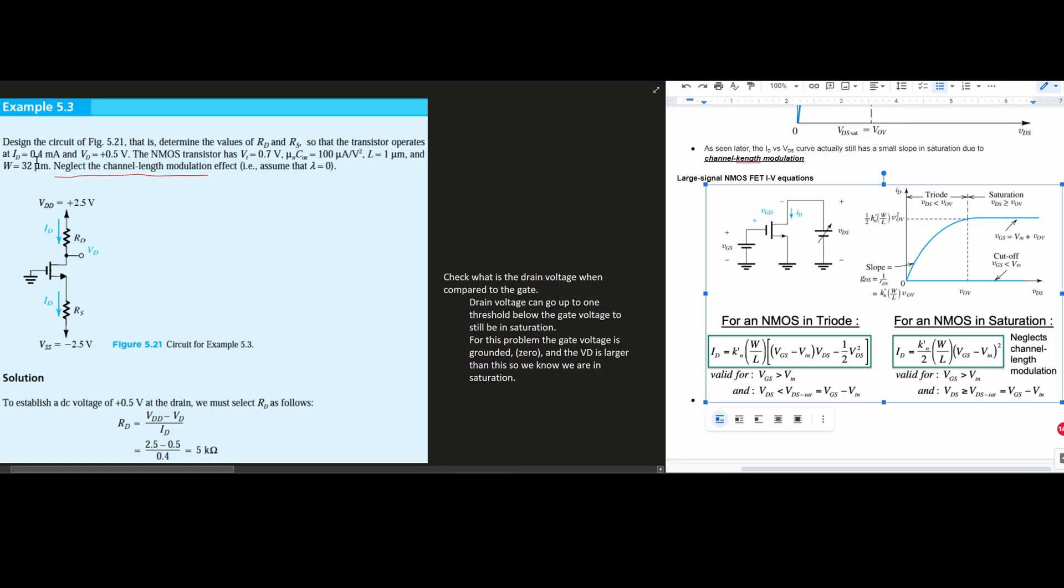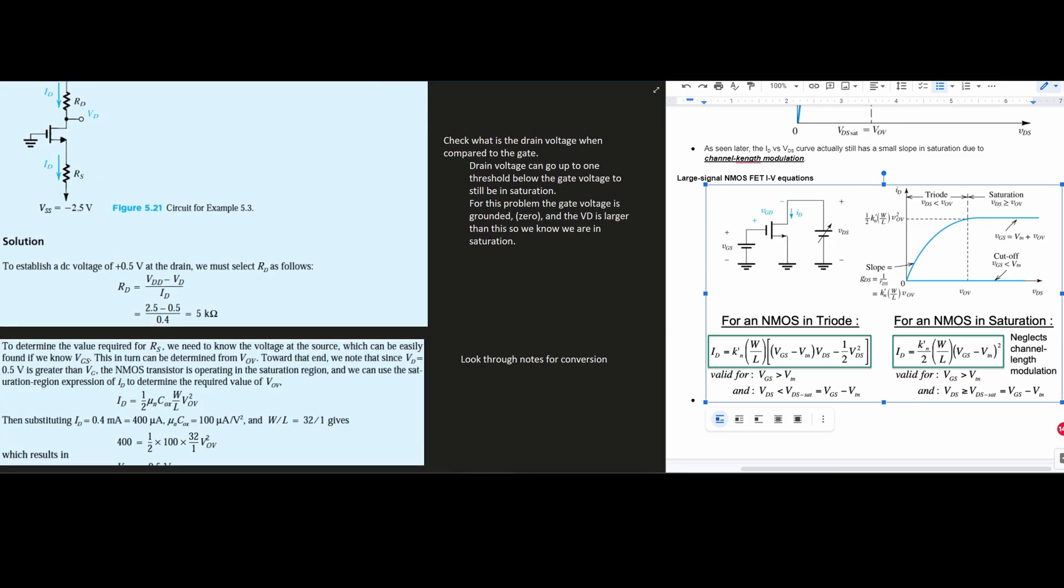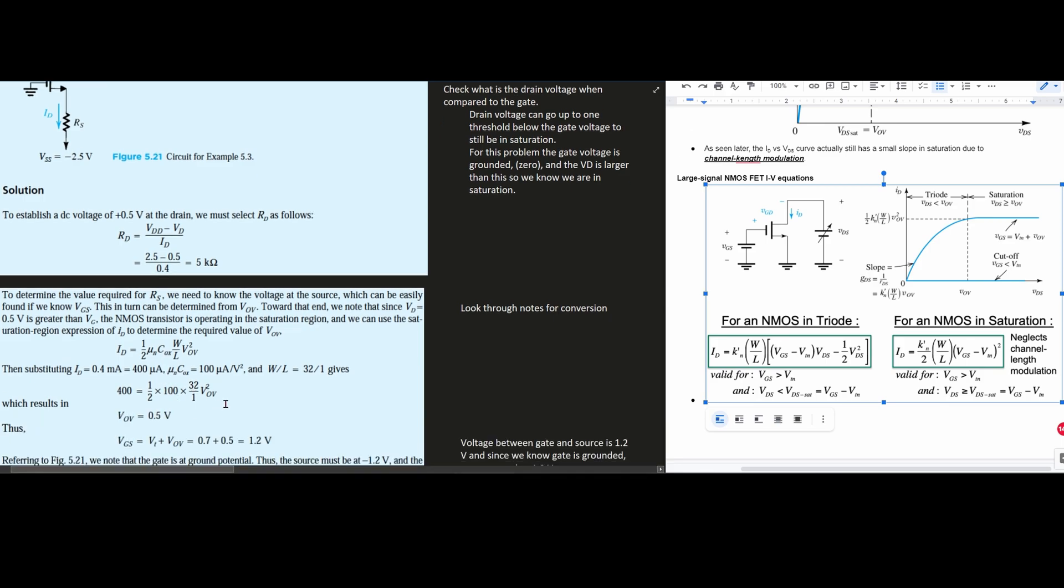That is from this right here that we're given. Notice this is 0.4 in here, but it's 0.4 milliamps, right? So to translate this it's going to be 400 microamps. So if we solve this, we're going to get VOV equal to 0.5 volts.